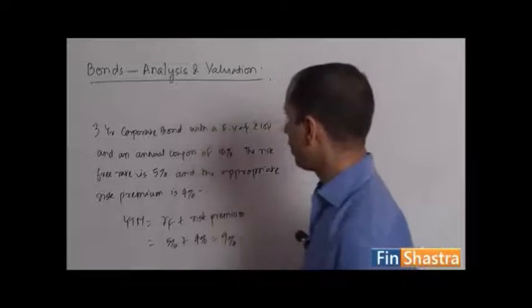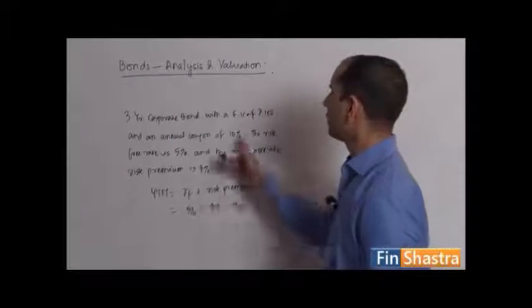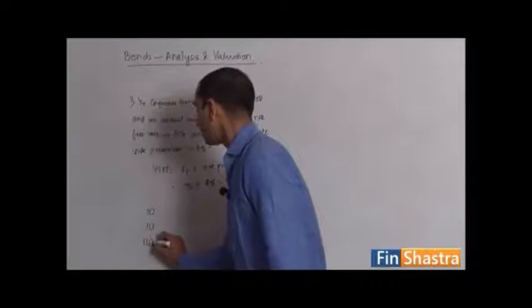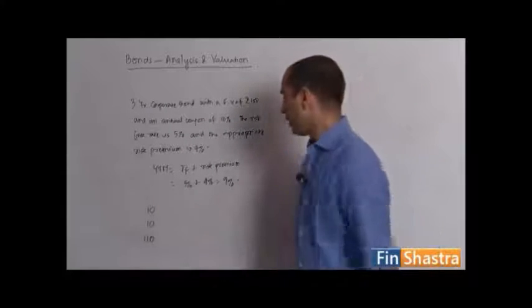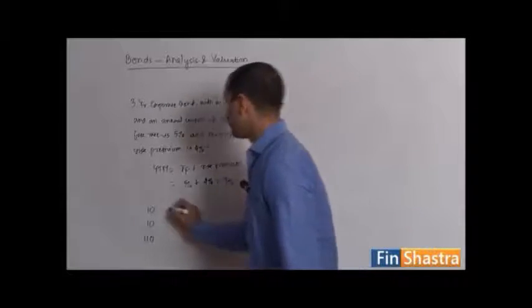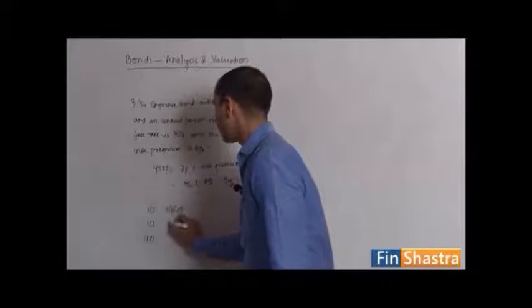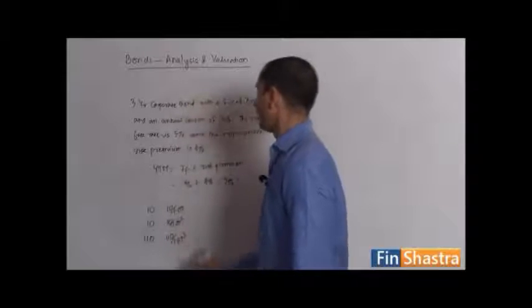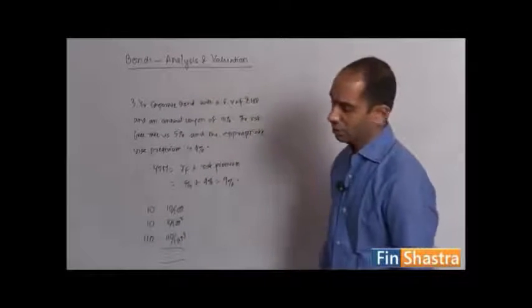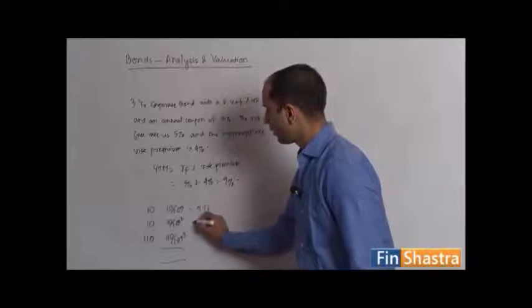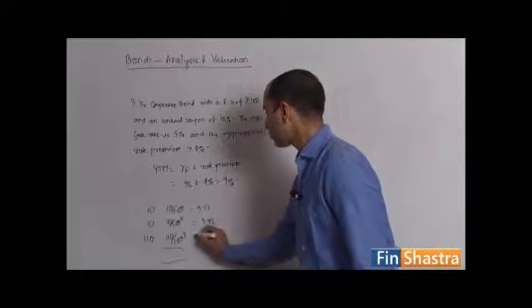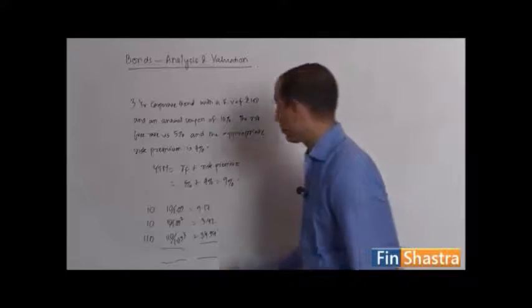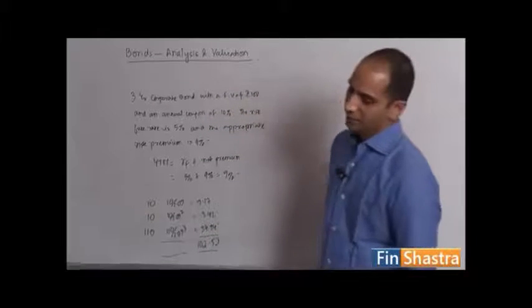Step one: set up the cash flows. With a 10 percent annual coupon on a rupees 100 face value bond, year one gives 10, year two gives 10, year three gives 10 plus 100. Step two: discount at nine percent. So 10 divided by 1.09, 10 divided by 1.09 squared, and 110 divided by 1.09 cubed. This gives 9.17, 8.42, and 84.94 respectively. Adding them up, we get a total price of 102.53.